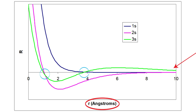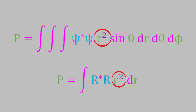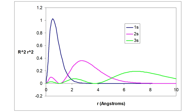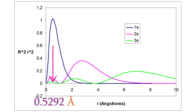We can find out the probability of finding our system in a particular state by solving this equation. Since the wave function doesn't depend on angles, we can simplify to the radial wave function multiplied by itself and then by r squared. If we plot that for the three wave functions, the 1s orbital starts at zero, rises to a maximum, and then drops back down. The most probable position for an electron occurs at a distance of 0.5292 angstroms — exactly the Bohr radius — which is exactly what we should expect.